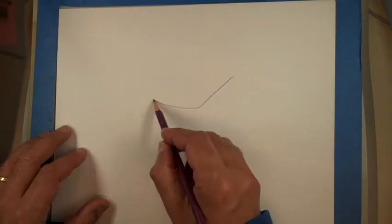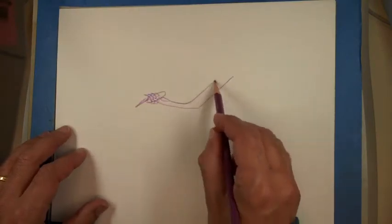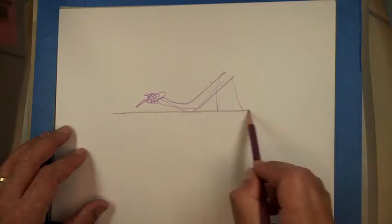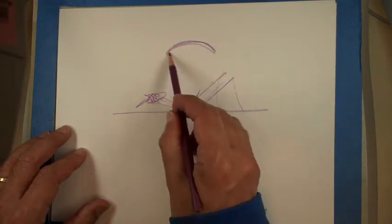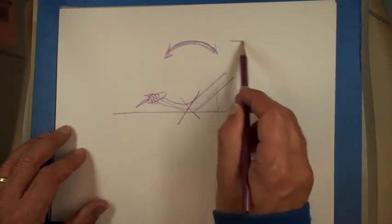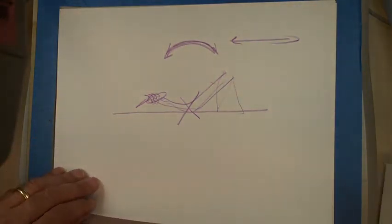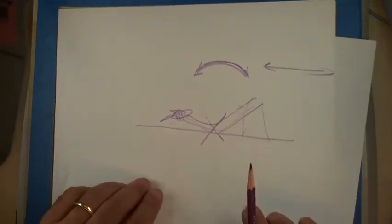So don't let the wrist rest on the table when you're drawing. Don't do that, because that forces you then to make your motion go this way, instead of going this way. And then just move the paper around for whatever you need.